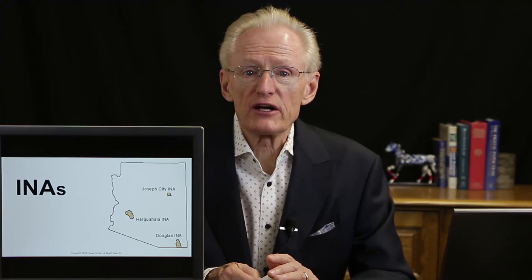In Arizona, there are two areas considered restricted, where groundwater use is restricted. The first is called an Irrigation Non-Expansion Area, an INA — an area where irrigation cannot be expanded, meaning no new fields can be irrigated. There are three INAs around the state: one in Joseph City, one in Harkahalla, and one in Cochise County in Douglas. If you're involved in farm and ranch brokerage and the property is in an INA, irrigation in all likelihood could not be expanded into new fields.